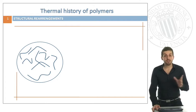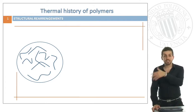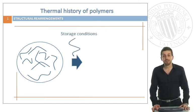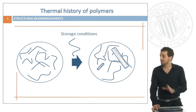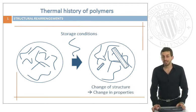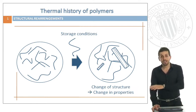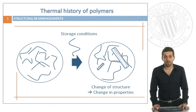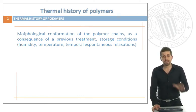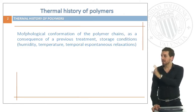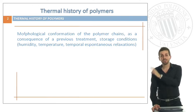This is a schematic view of a polymer in which we have some different chains that are distributed in the bulk polymer. It can happen that due to different storage conditions these chains can rearrange among themselves in order to obtain a different structure. This change in structure can lead to a change in properties. So about the thermal history of polymers we can see how this morphological conformation of the polymer chains happens as a consequence of a previous treatment or storage conditions.